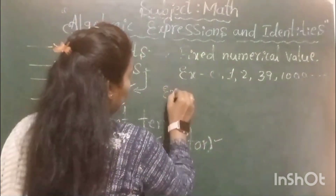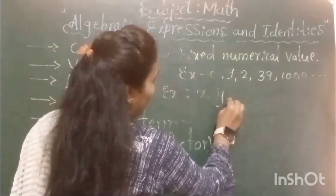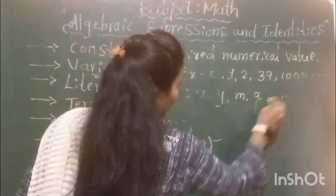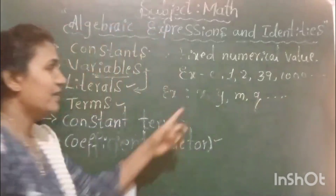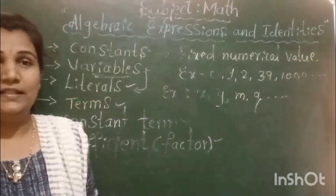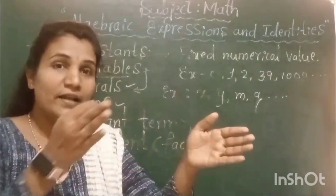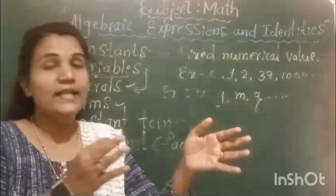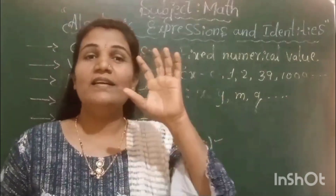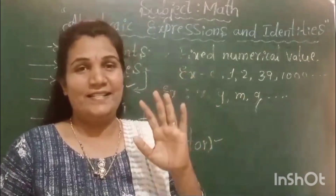Let me take an example: X, Y, M, Q — these all are examples for literals. A literal is essentially a variable itself, because a variable is an unknown quantity that does not have a fixed numerical value, so we represent it by letters — literals.